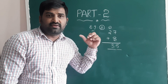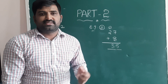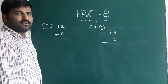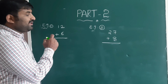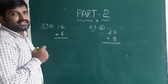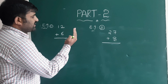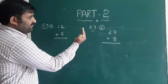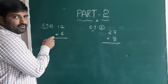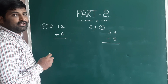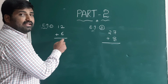Now I will explain the same examples using Vedic mathematics. The main difference between general and Vedic mathematics is this: in general addition and subtraction we work from right to left, but in Vedic mathematics we do addition and subtraction from left to right.